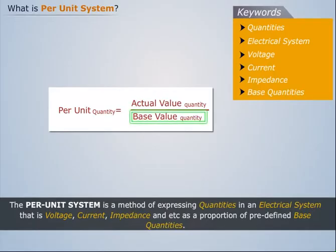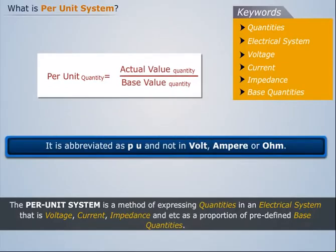The units of these normalized values are per unit. It is abbreviated as PU and not in volt, ampere, or ohm.